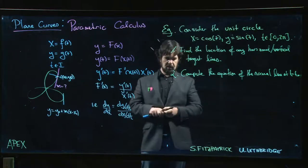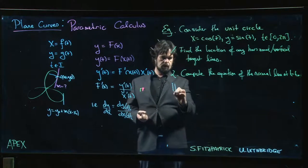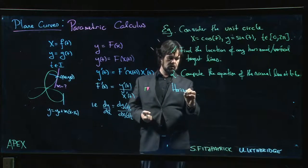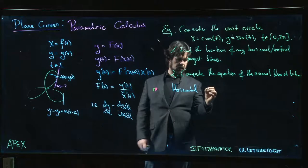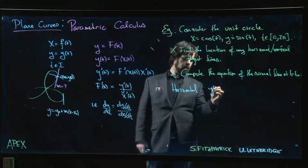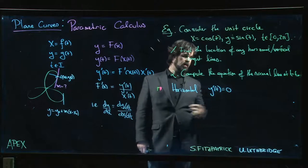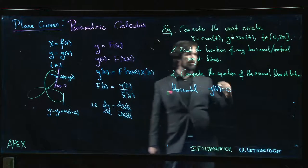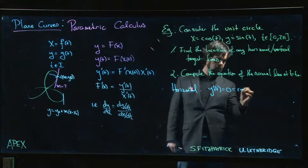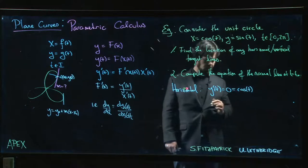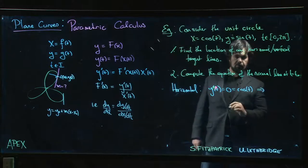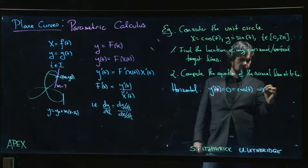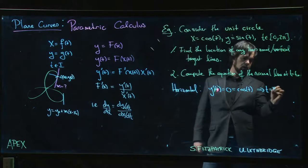Well, we know that for horizontal tangent lines, we want y'(t) to be equal to 0. But y'(t) is just cosine of t. And between 0 and 2π, there are precisely two places where cosine of t equals 0: at π/2 and at 3π/2.